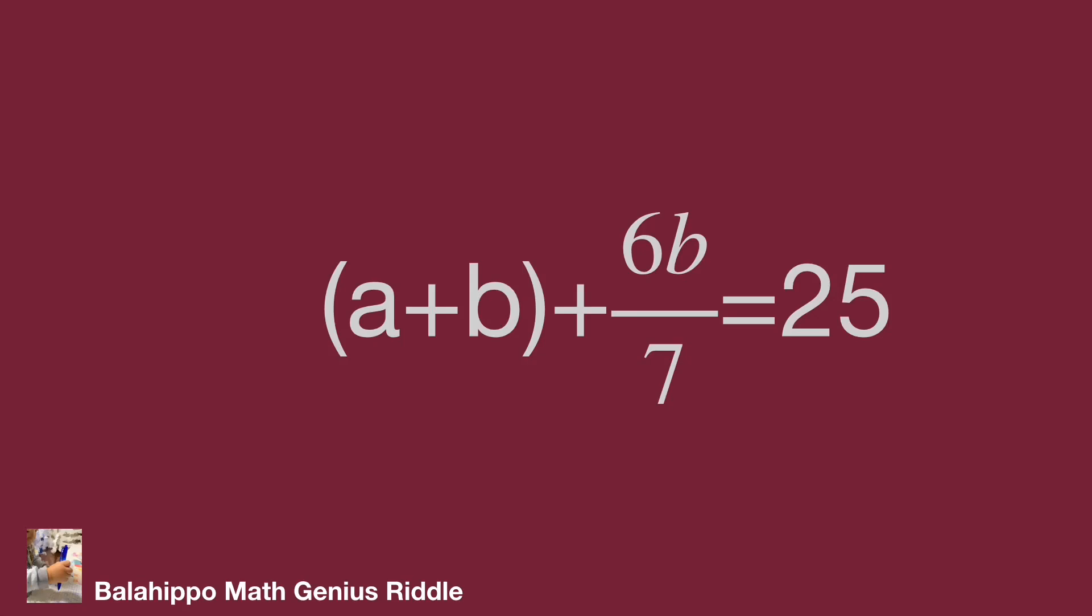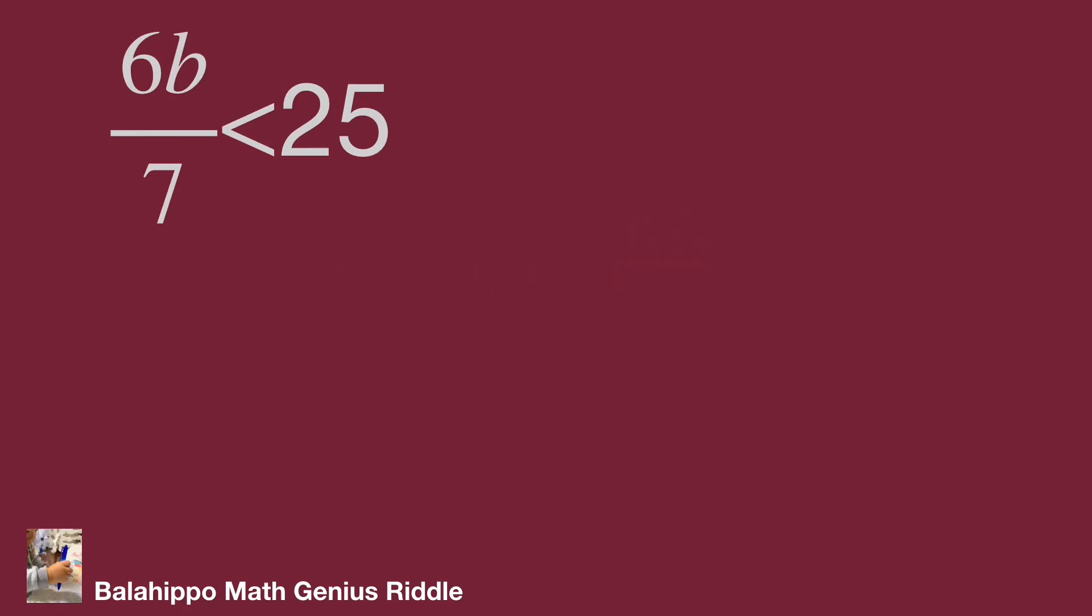So 6b over 7 should be a positive integer. And from the equation, we also gather other information: 6b over 7 less than 25. Since 6b over 7 is an integer, 6b over 7 should be divisible by 7.